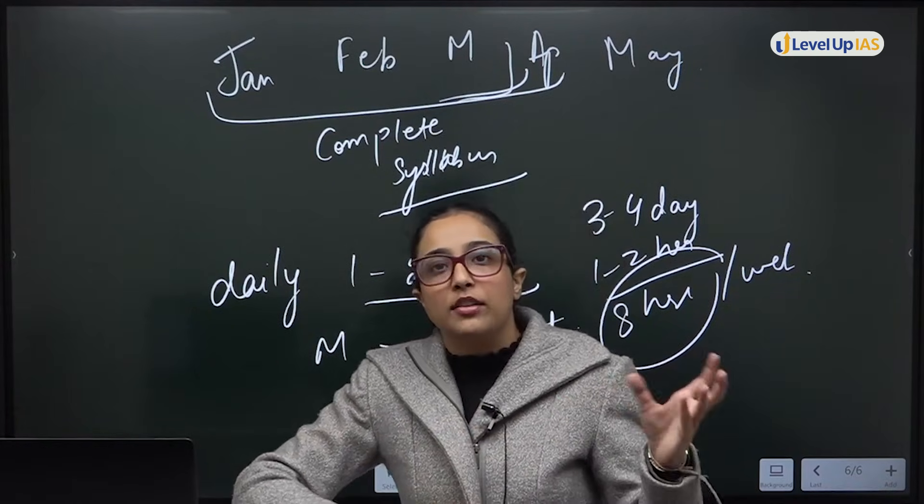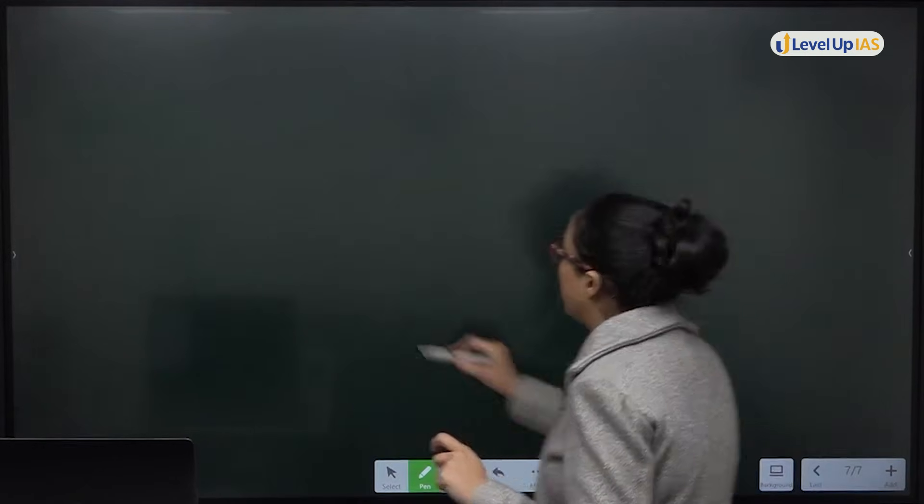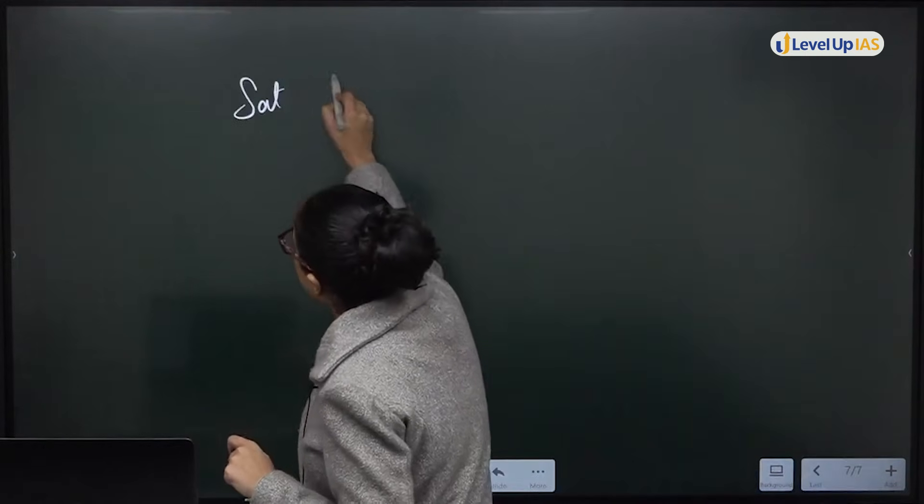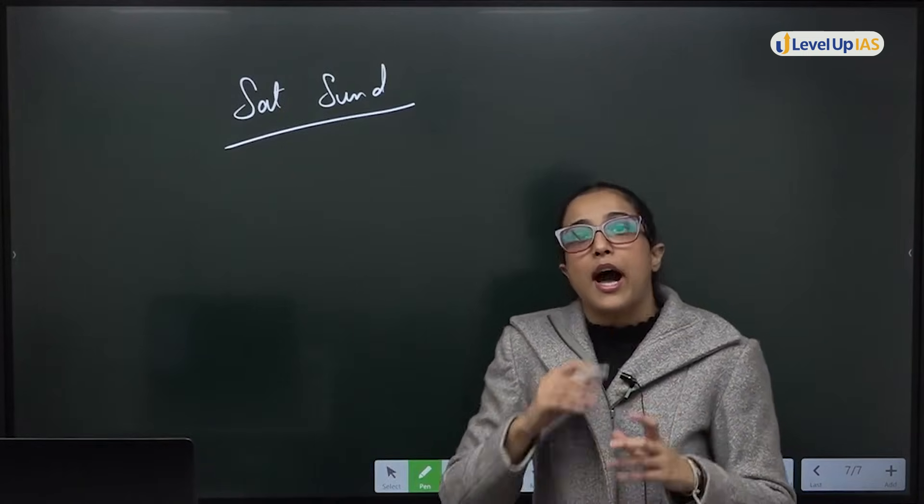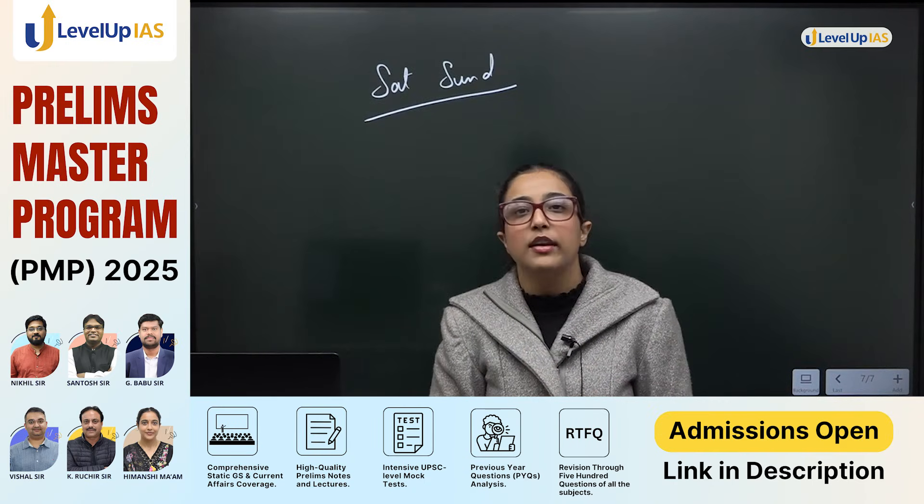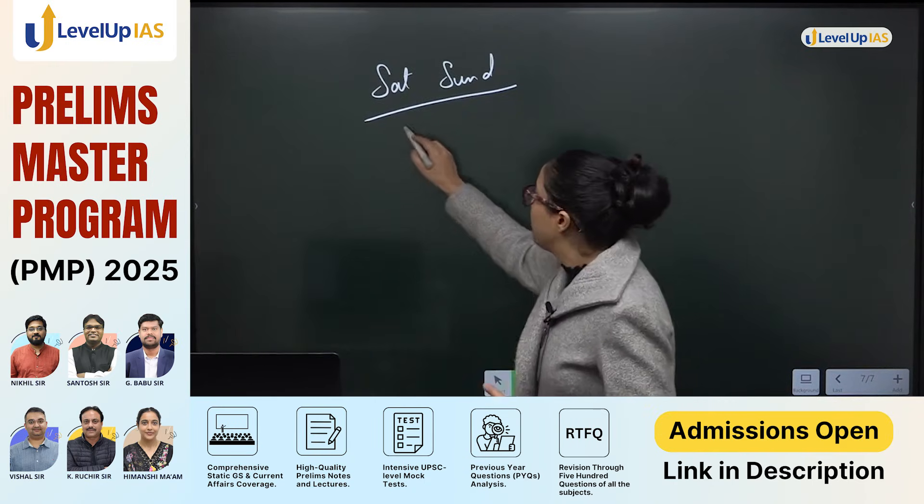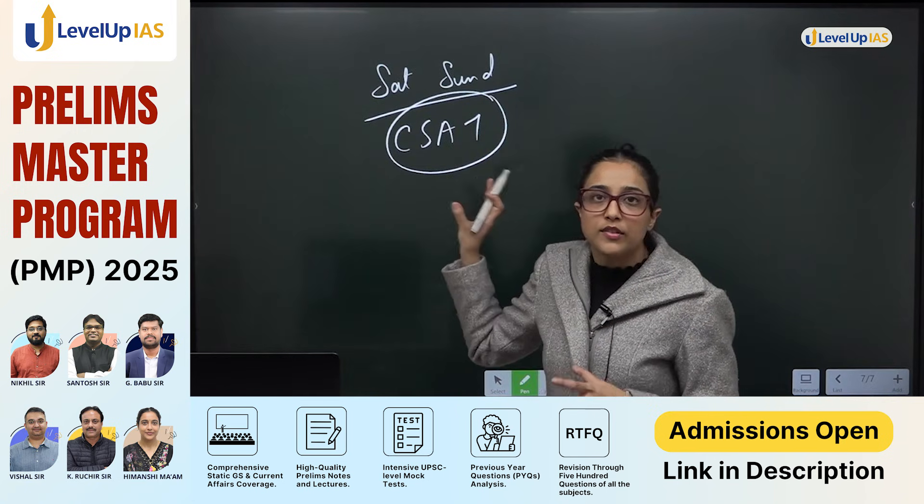For example, you are done with your GA studies. You can assign either Saturday or Sunday. If your CSAT is very weak, I will say assign two days. I am not saying that you cannot study GS Saturday or Sunday. You can do. But mainly these will be days that will focus on CSAT.